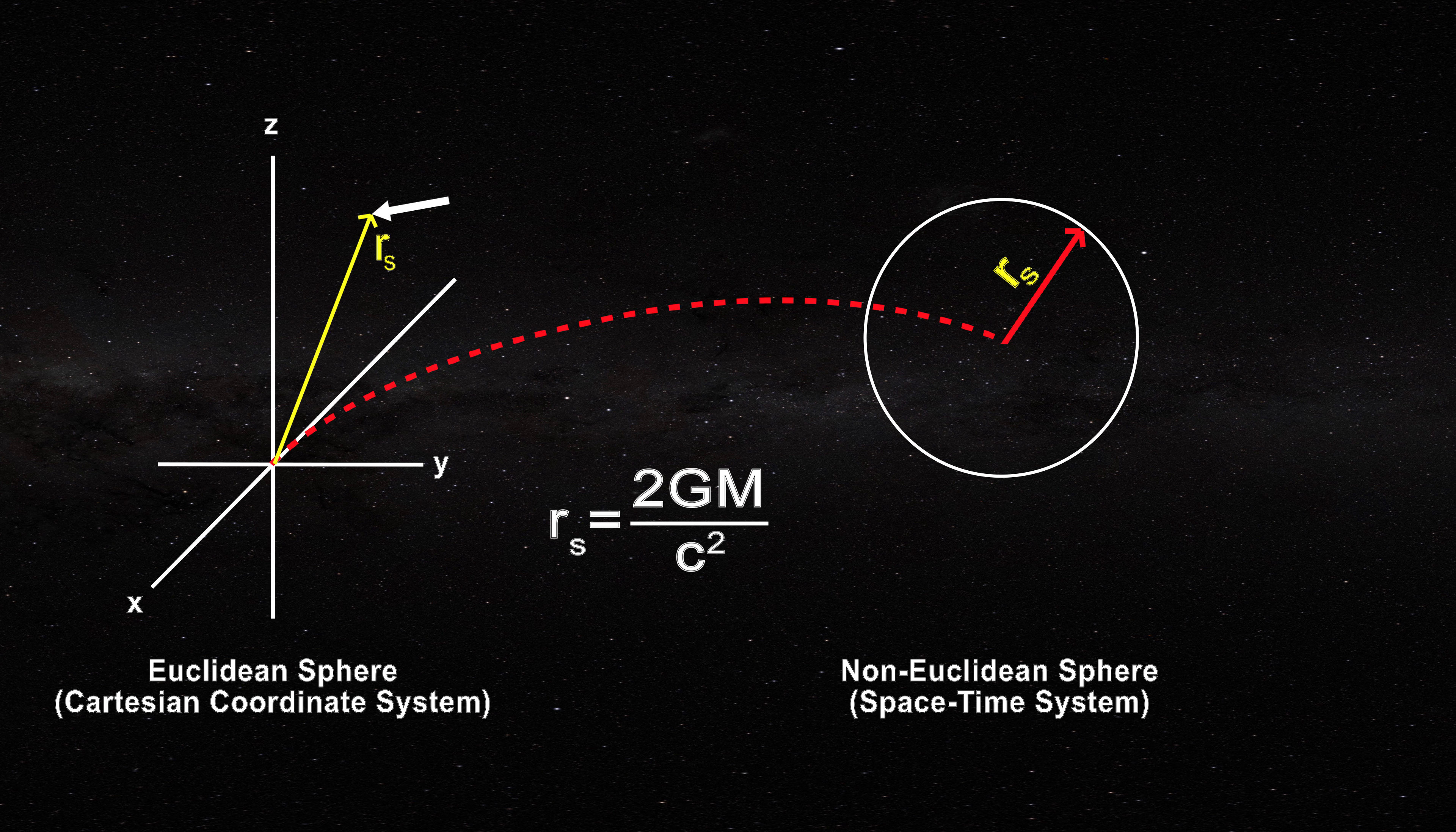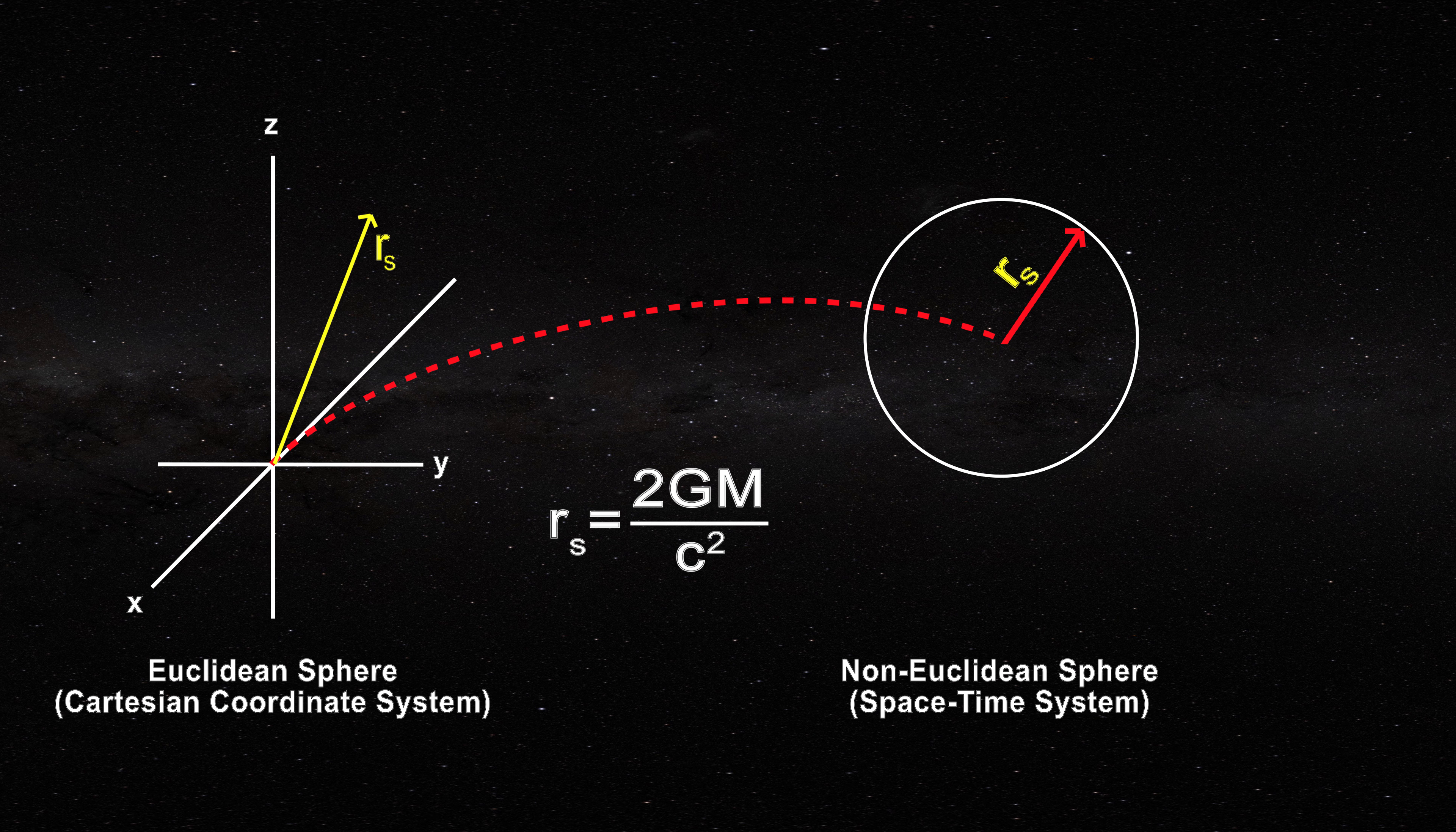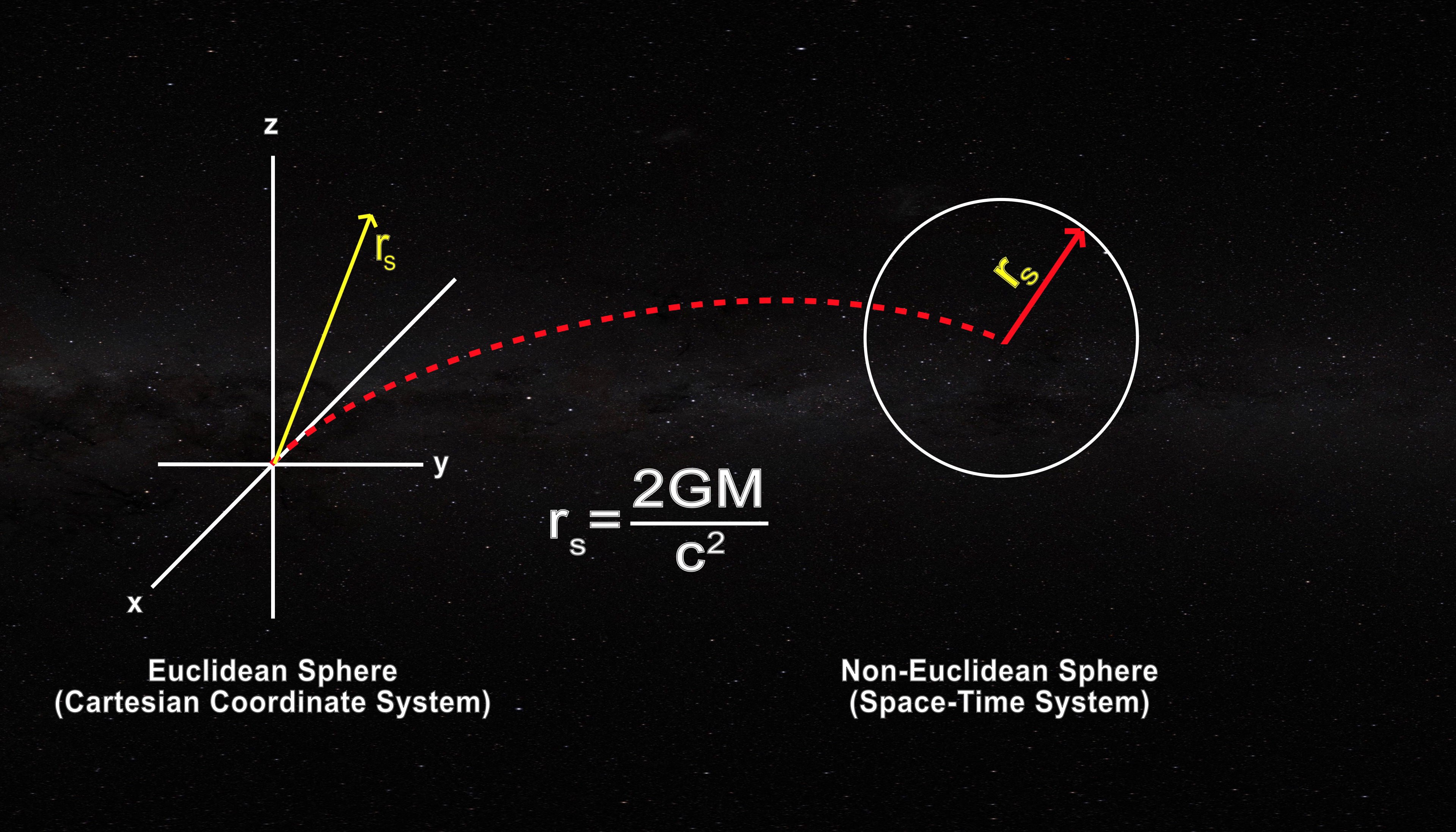Thus, when rho approaches zero, the Euclidean sphere closes upon its center, but the black hole has not closed upon its supposed center.